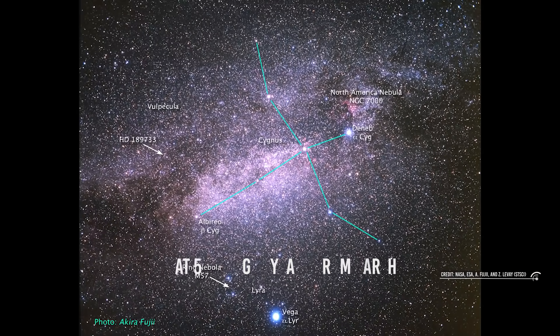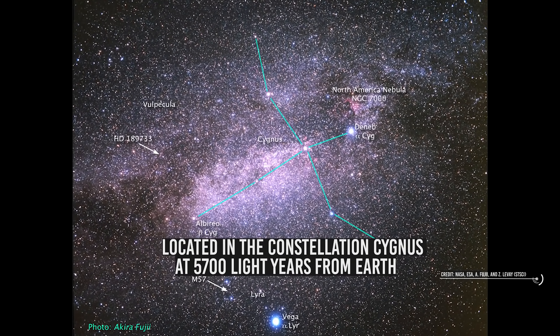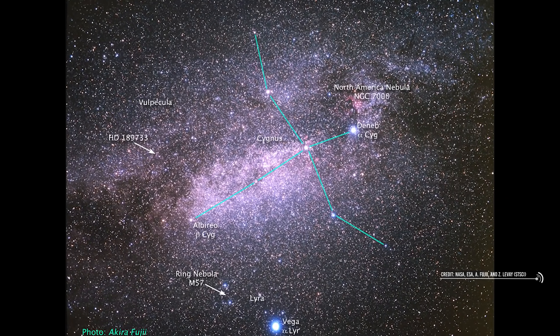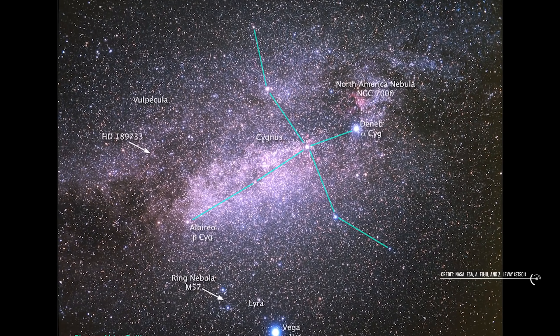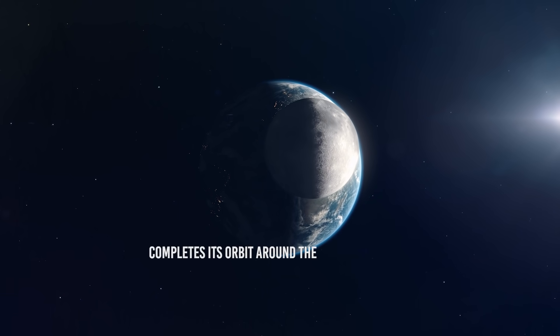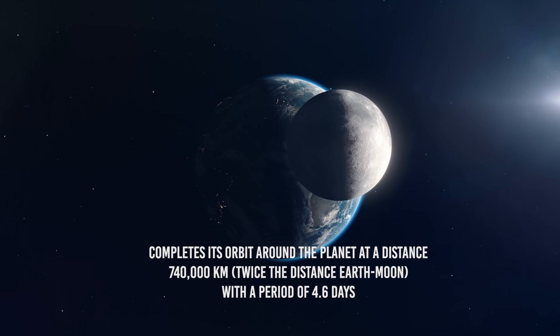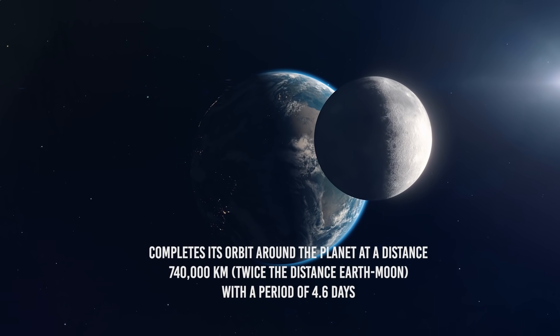The planet orbits the star Kepler-1708, located in the constellation Cygnus at 5,700 light-years from Earth, at a distance of 1.6 AU and with a period of 737 days. The object, for the moment classified as the exomoon Kepler-1708b-i, completes its orbit around the planet at a distance of 740,000 km, twice the distance between the Earth and the Moon, with a period of 4.6 days.